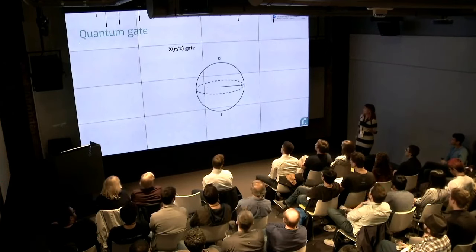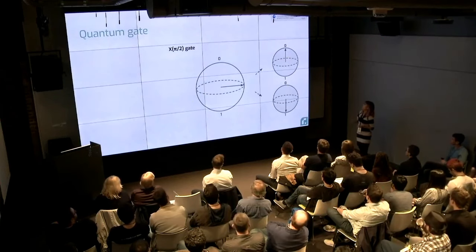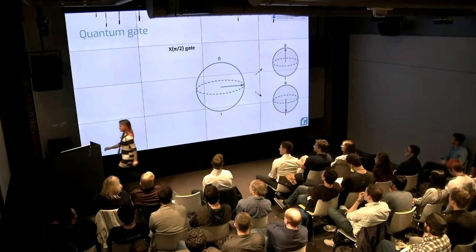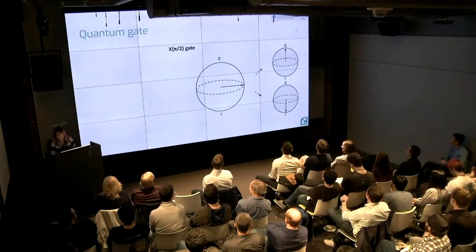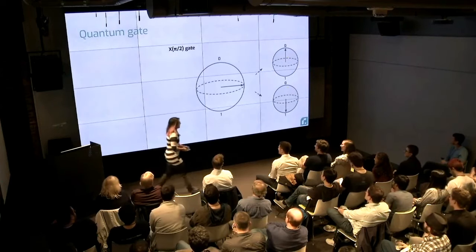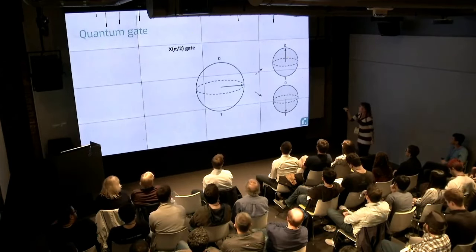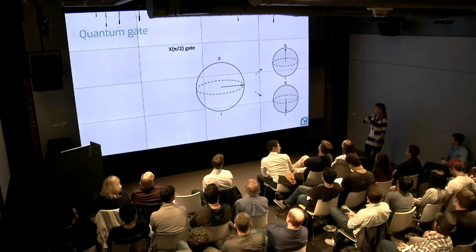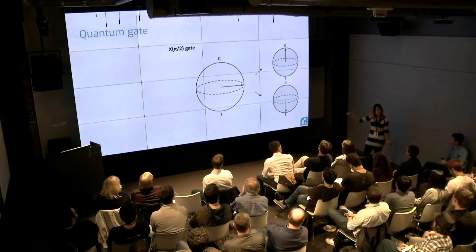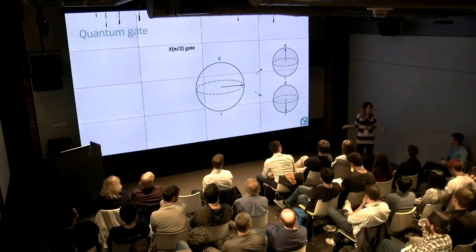We're going to map it onto the z-axis. Half the time — let's say I do this 1,000 times — then 500 times I'm going to measure zero, and 500 times I'm going to measure one. So I can take the average of that and I'm going to get 0.5.